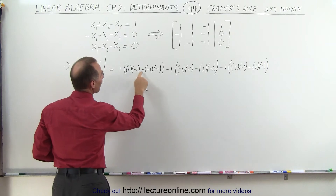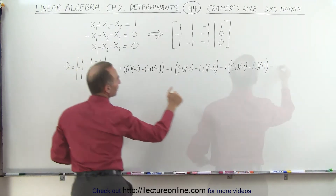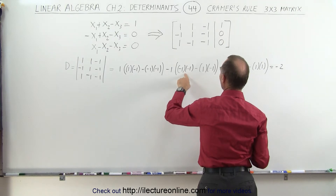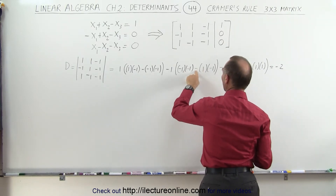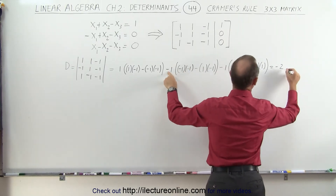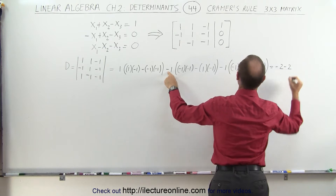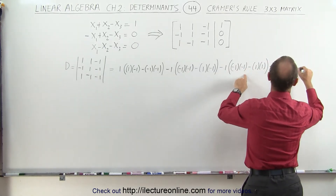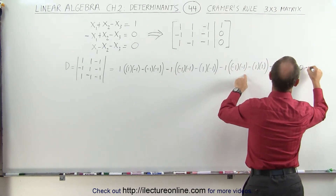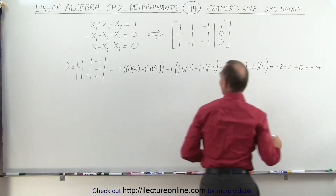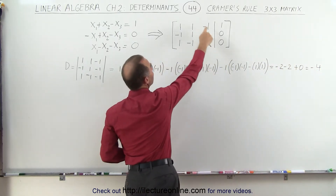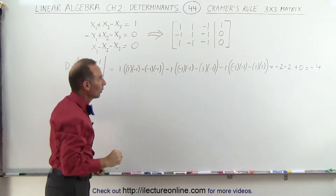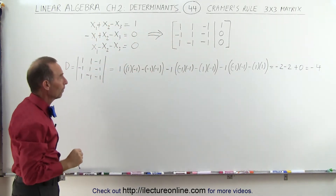Negative 1 minus 1 is negative 2. Then plus 1 — minus times minus is plus 1 — that's plus 2 times negative 1 is negative 2. And here we have 1 minus 1, which is 0 — giving us negative 4 total. The determinant of the coefficients of the three variables x1, x2, x3 equals negative 4.